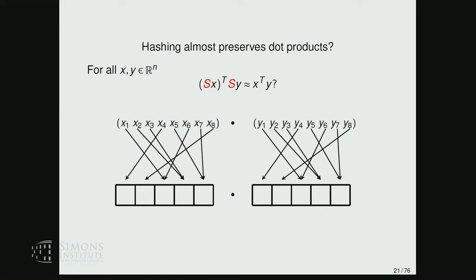The Frobenius norm squared of the difference between two matrices separates over the entries. So if we are shooting for a Frobenius norm closeness bound, all we need to do is take all pairs of basis vectors U_i and U_j—D-squared of those—and compare the dot product between them to the delta function of i equals j. We want to prove that hashing with random signs, which is what count sketch is, almost preserves dot products.